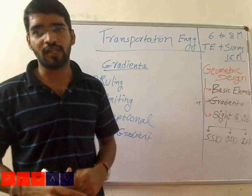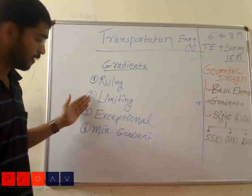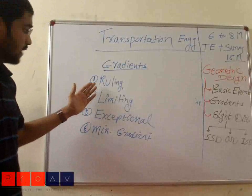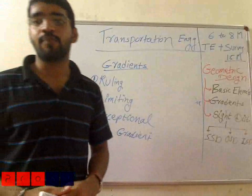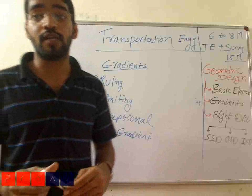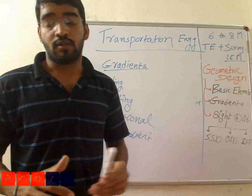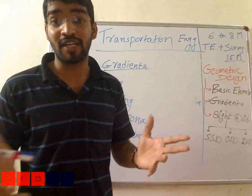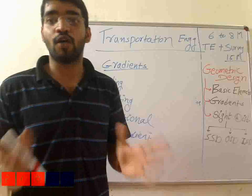We have different types of gradients: rolling gradient, limiting gradient, exceptional gradient, and minimum gradient. Rolling gradient is also known as a design gradient. It is a permissible gradient such that the tractive effort of a vehicle can counteract the tractive resistance without much fatigue increase in case of an animal-driven vehicle, and without uneconomical consumption of petrol in case of a power-driven vehicle.